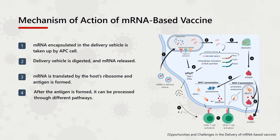mRNA is transported to antigen-presenting cells and translated into target antigen by ribosomes. The antigen is then degraded by proteasomes to form polypeptide epitopes, which bind to MHC molecules of the major histocompatibility complex in the endoplasmic reticulum. The MHC complex is presented on the surface of APCs and activates antigen-specific T and B cells to elicit an immune response.